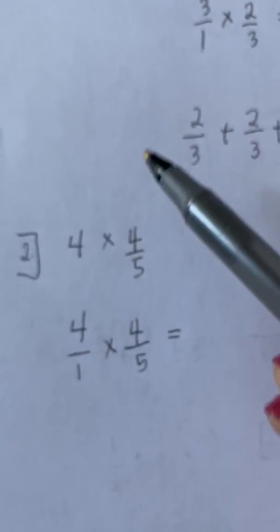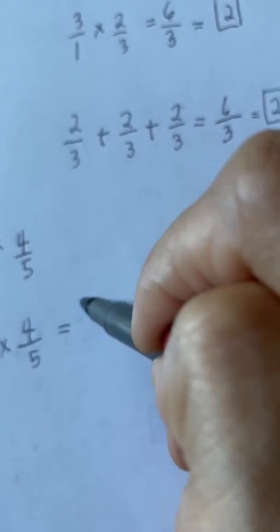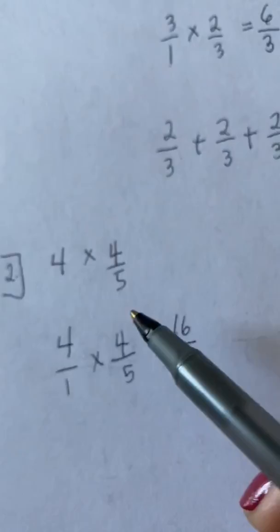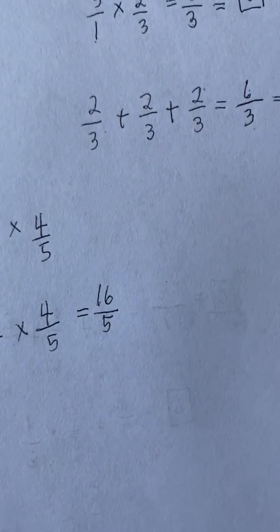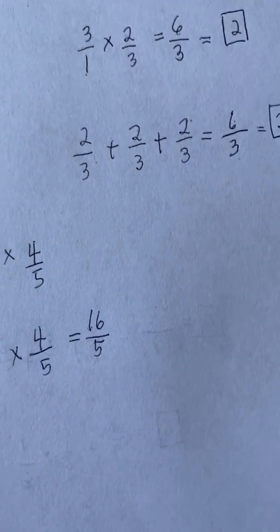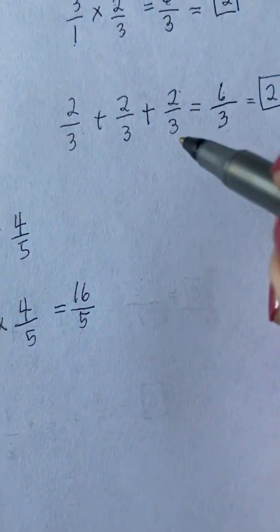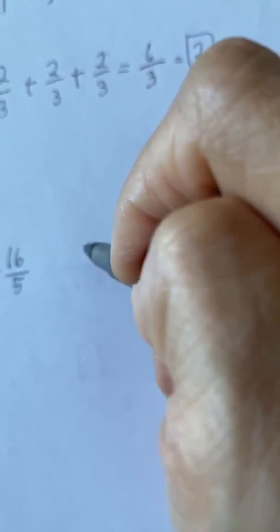So we will have 4 divided by 1 times 4 fifths. So again, we multiply 4 times 4, which is 16, and 1 times 5, which is equal to 5. So we have 16 over 5. To get the answer and also the lowest term, I will show you how to divide 16 over 5.